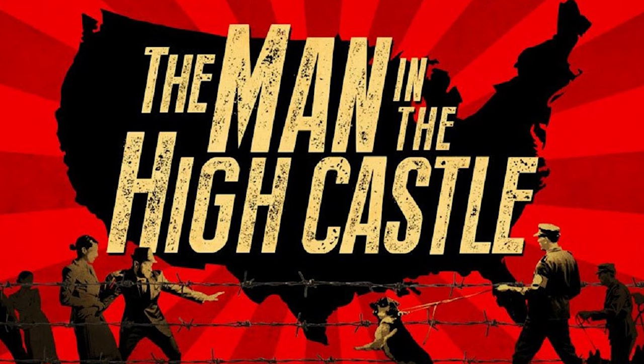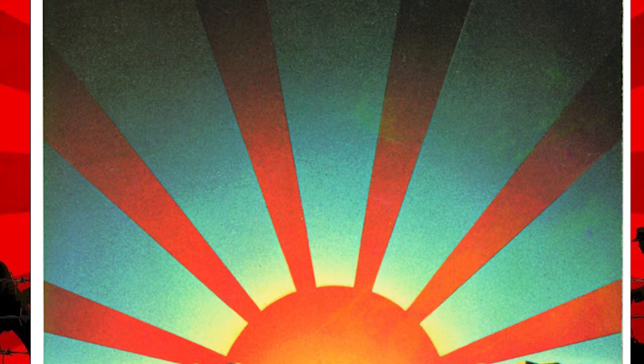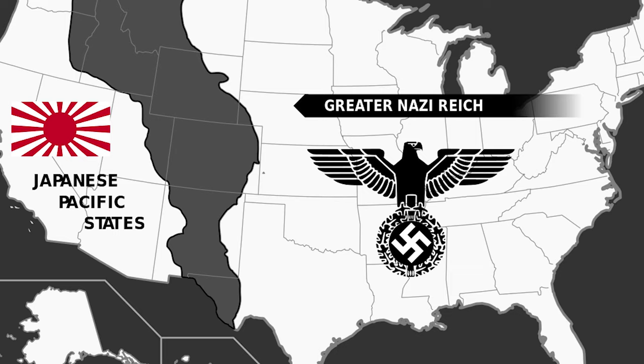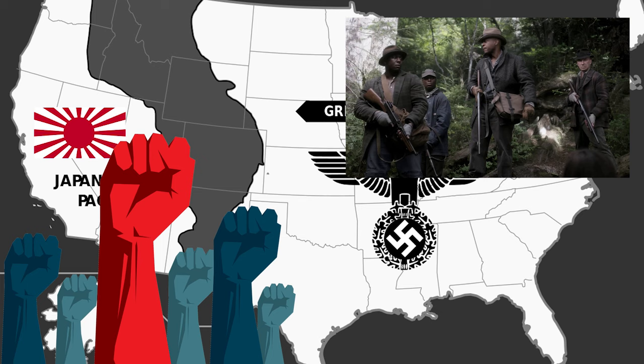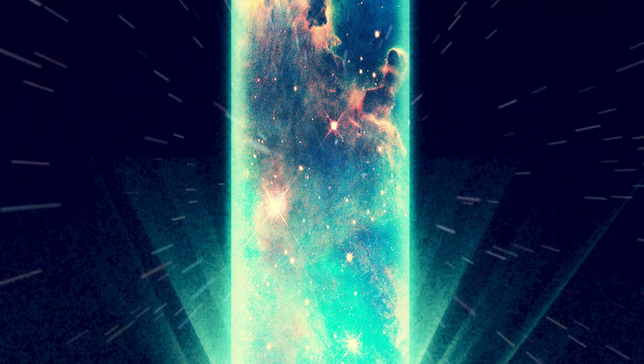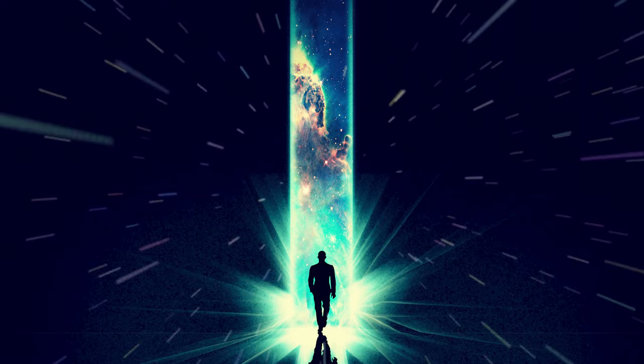For those who need reminding, The Man in the High Castle is based on the novel by Philip K. Dick. It's set in an alternate reality where the Allies lose the Second World War and Nazi Germany and Japan rise to power. It follows the rise of an American resistance group in the Nazi-controlled US East Coast.